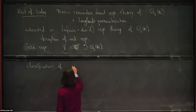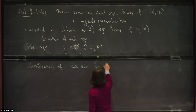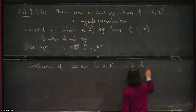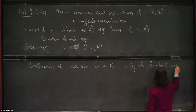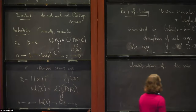Harish-Chandra's classification of discrete series representations says there are as many discrete series representations as there are finite-dimensional representations. It's important to use GL2 and not SL2: for SL2 there would be two discrete series representations for each finite-dimensional one, since σ as an SL2(R) representation would decompose into two pieces.